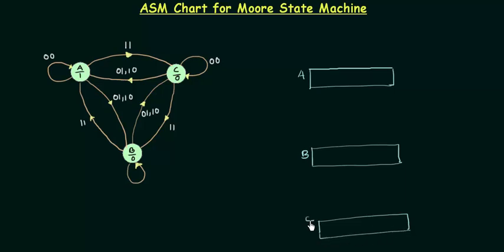One thing you have to keep in mind is the condition box. We will not use the condition box here because this is the Moore state machine, and the condition box is only used in the Mealy state machine and only when the output is high. That's why it is also called the Mealy box.